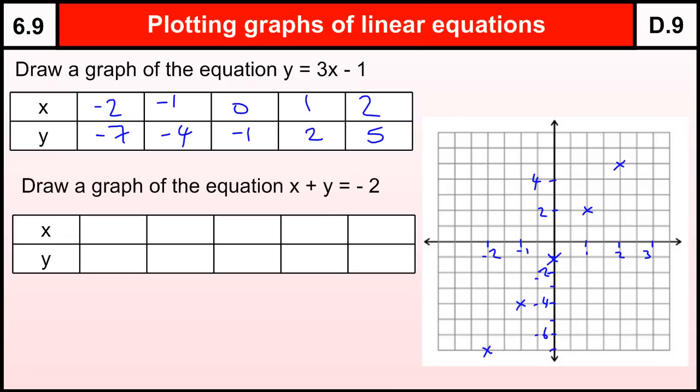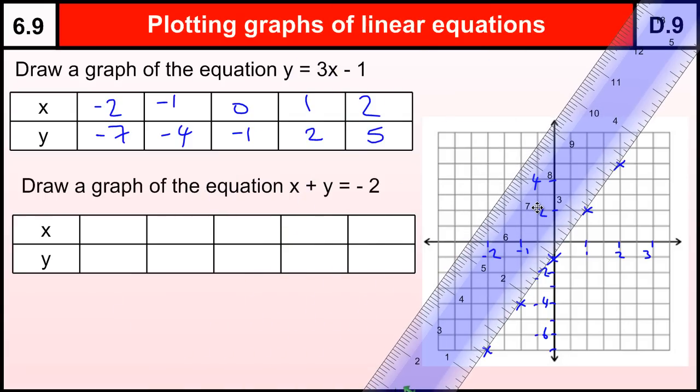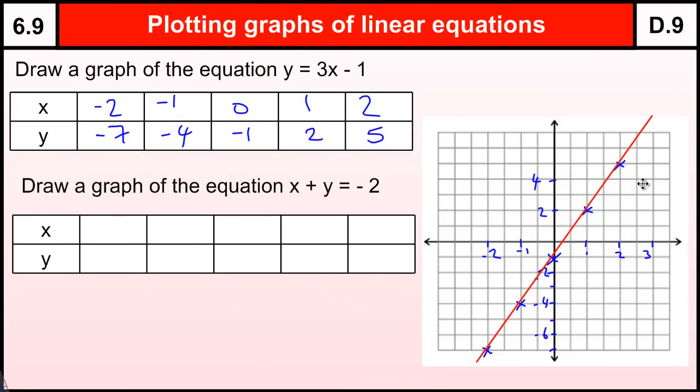OK. What we need now is a ruler to draw a line through the points. You must draw a line through the points to finish off drawing a graph. Hopefully draw it nice and accurately. And always, when you're drawing a graph, don't stop at the last point, take it off to the end of your grid.